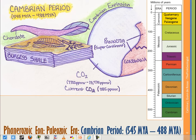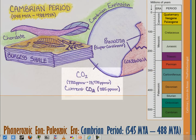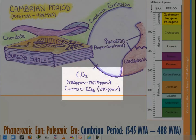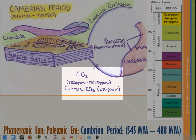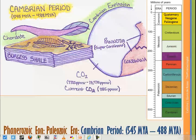During the Cambrian, most modern phyla appear, along with many extinct forms. Panatea breaks up and Gondwana emerges — the southern chunk of Panatea — which is paleogeographically significant. At this time, atmospheric CO2 is 20 to 35 times greater than today. Today we have about 385 parts per million volume of CO2; at this time, there was 7,700 to 13,475 parts per million volume. That gives you something to think about in terms of global warming.